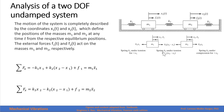We sum forces for the first mass. We have the force of spring 1 negative, then the force of spring 2, which is the spring constant times the relative motion between the two masses, plus the external force, and that equals mass times the acceleration of the first mass. For the second mass, we have the force of spring 3 minus the force of spring 2 plus force f2, equals mass times the acceleration of mass 2.